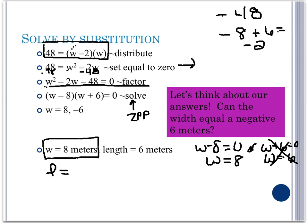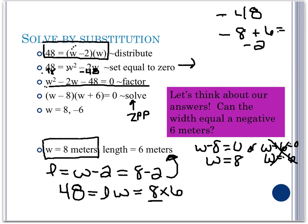And since our length is our width minus 2, we know that our length is given by 6 meters. We can verify this is our answer because we need the area of 48 square meters to equal to our length times width. And indeed, 8 times 6, our width and our length is indeed equal to 48.